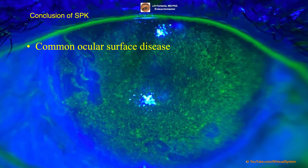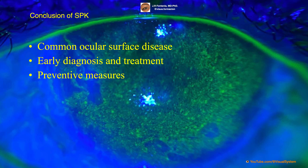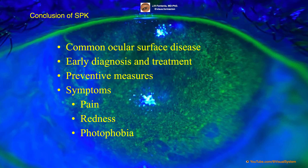Superficial punctate keratitis is a common ocular surface disease that can be caused by a variety of factors. Early diagnosis and treatment are essential for preventing long-term complications such as corneal scarring and permanent vision loss. By taking preventive measures such as maintaining good hygiene practices and seeking prompt treatment for any eye infections, you can reduce your risk of developing superficial punctate keratitis and protect your vision. If you experience any symptoms such as pain, redness, or sensitivity to light, it is important to seek prompt medical attention from an eye care professional.